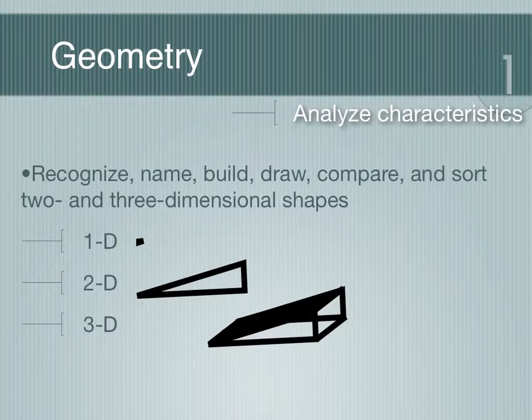Before students understand what a three-dimensional shape is, you need to be able to show them a variety of things. One-dimensional shape is just a point, a point in space. It doesn't have length, width, or height. Just a point. Two-dimensional has width and height. Three-dimensional also has depth. So, as you see, one-dimensional is a point, two-dimensional is a triangle, and that three-dimensional shape is a triangular prism.